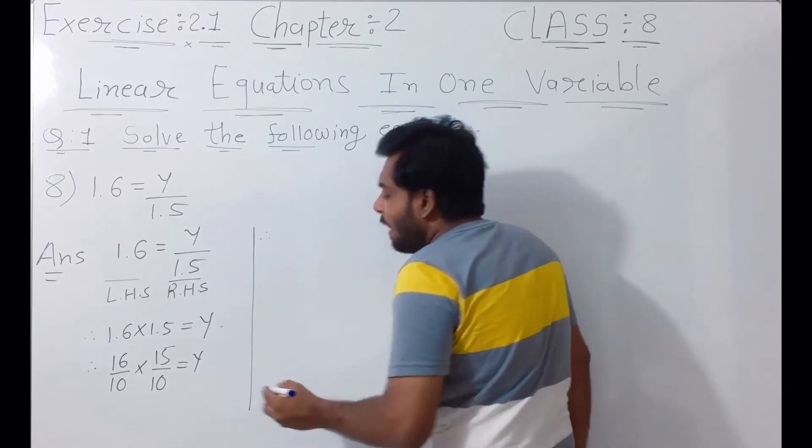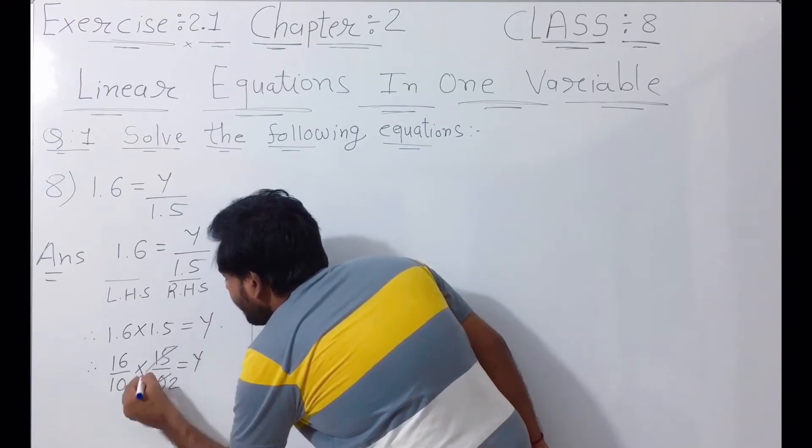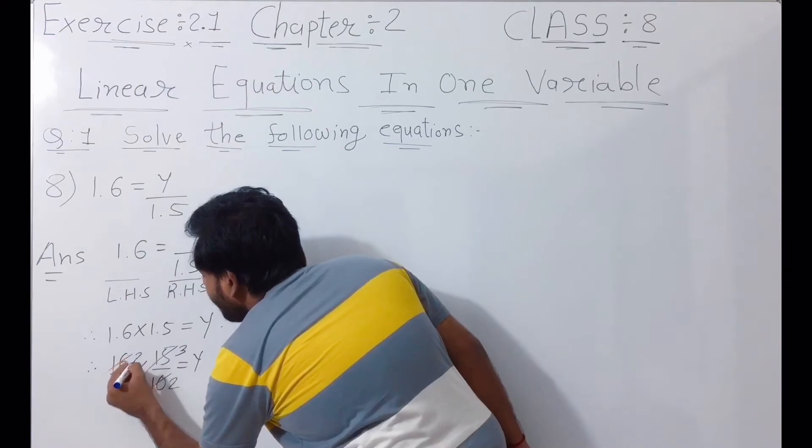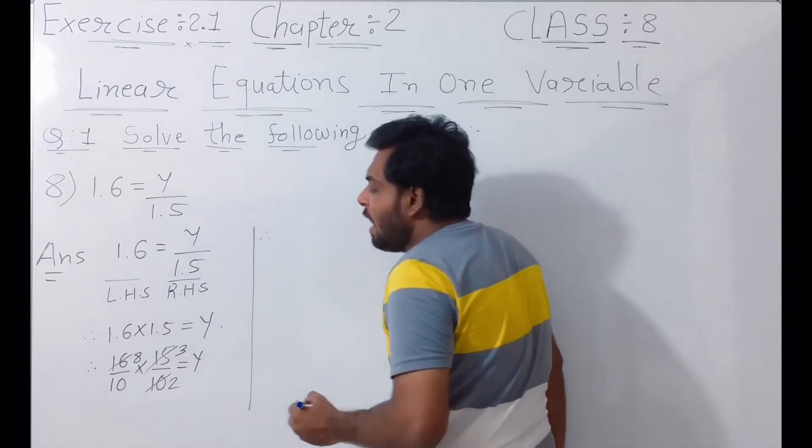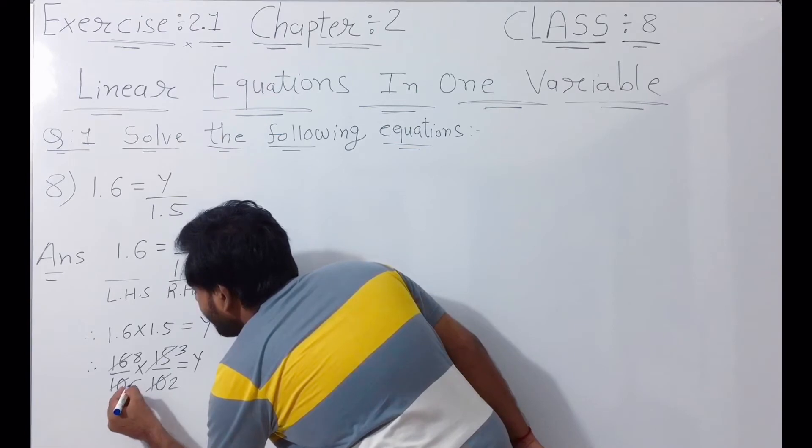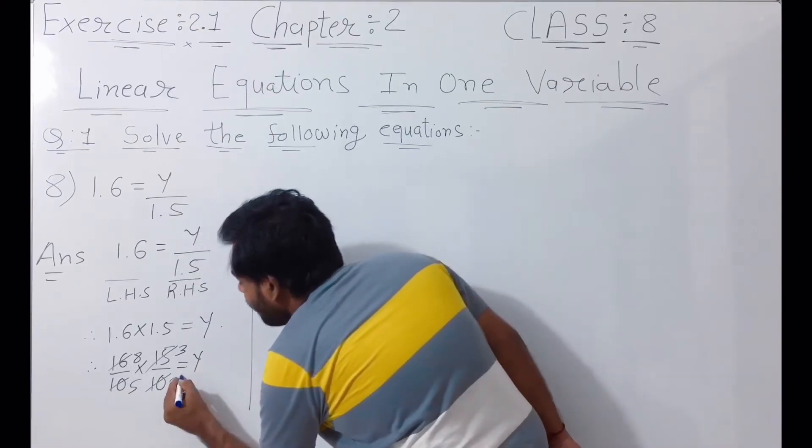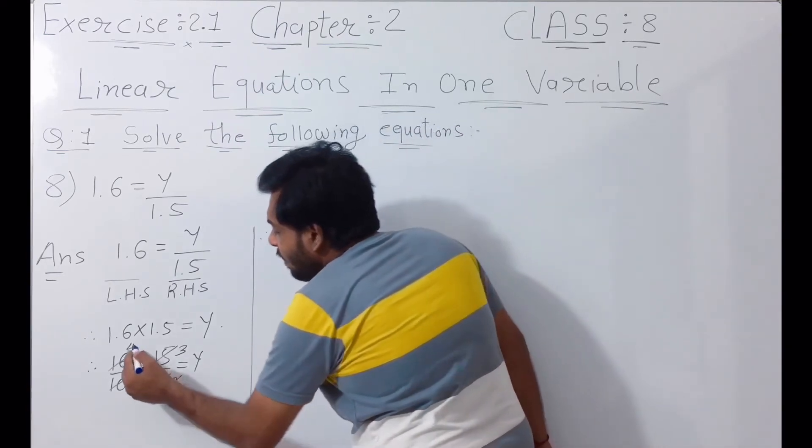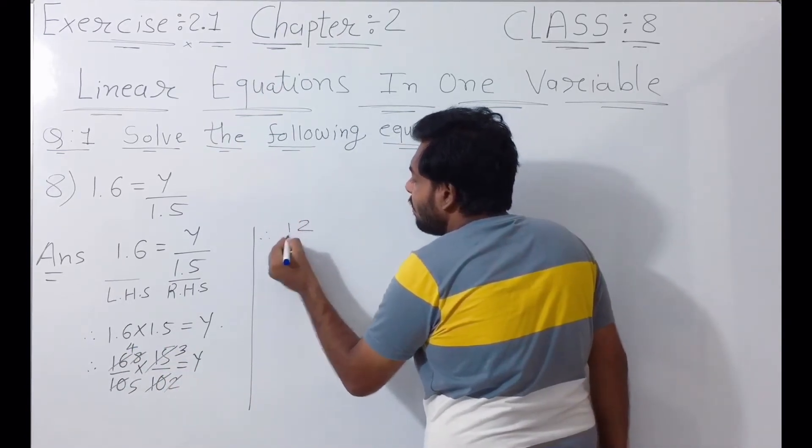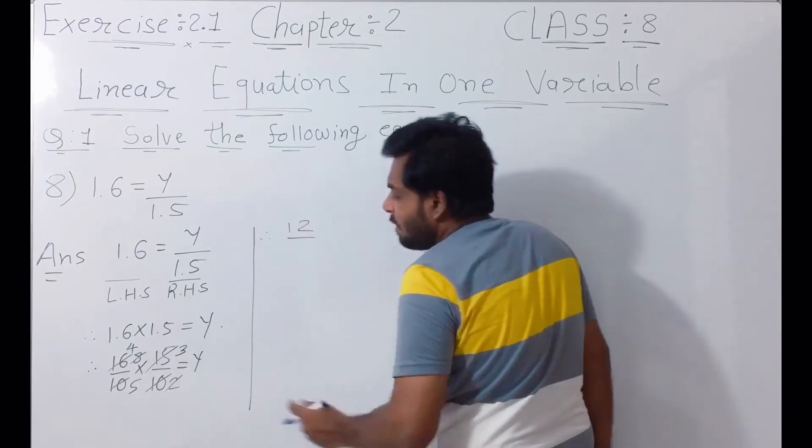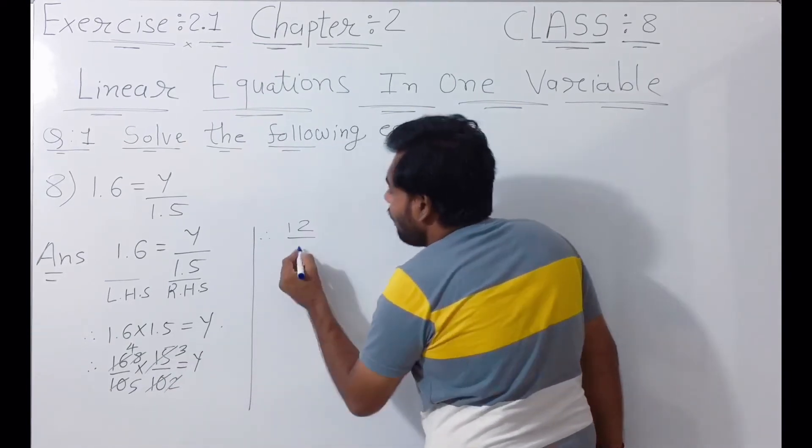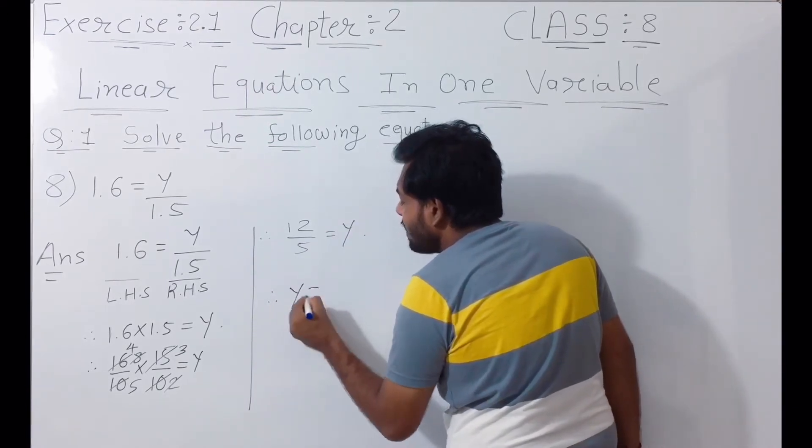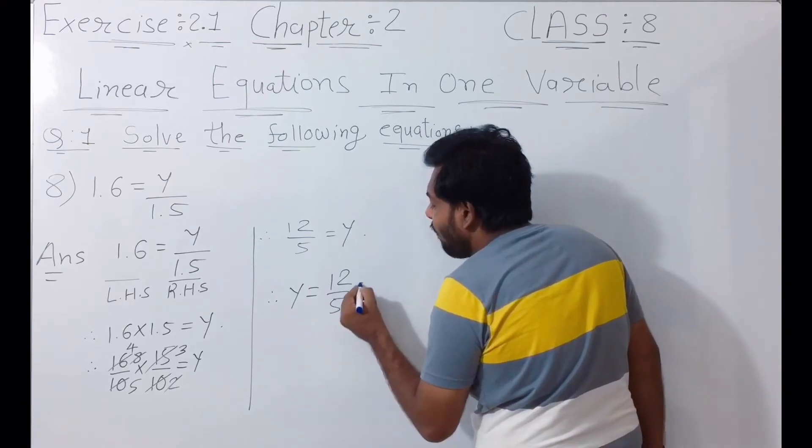Here we simplify: 5 goes into 10 and 5 goes into 15. Then 2 goes into 16 and 2 goes into 10. We get the answer y is equal to 12 divided by 5.